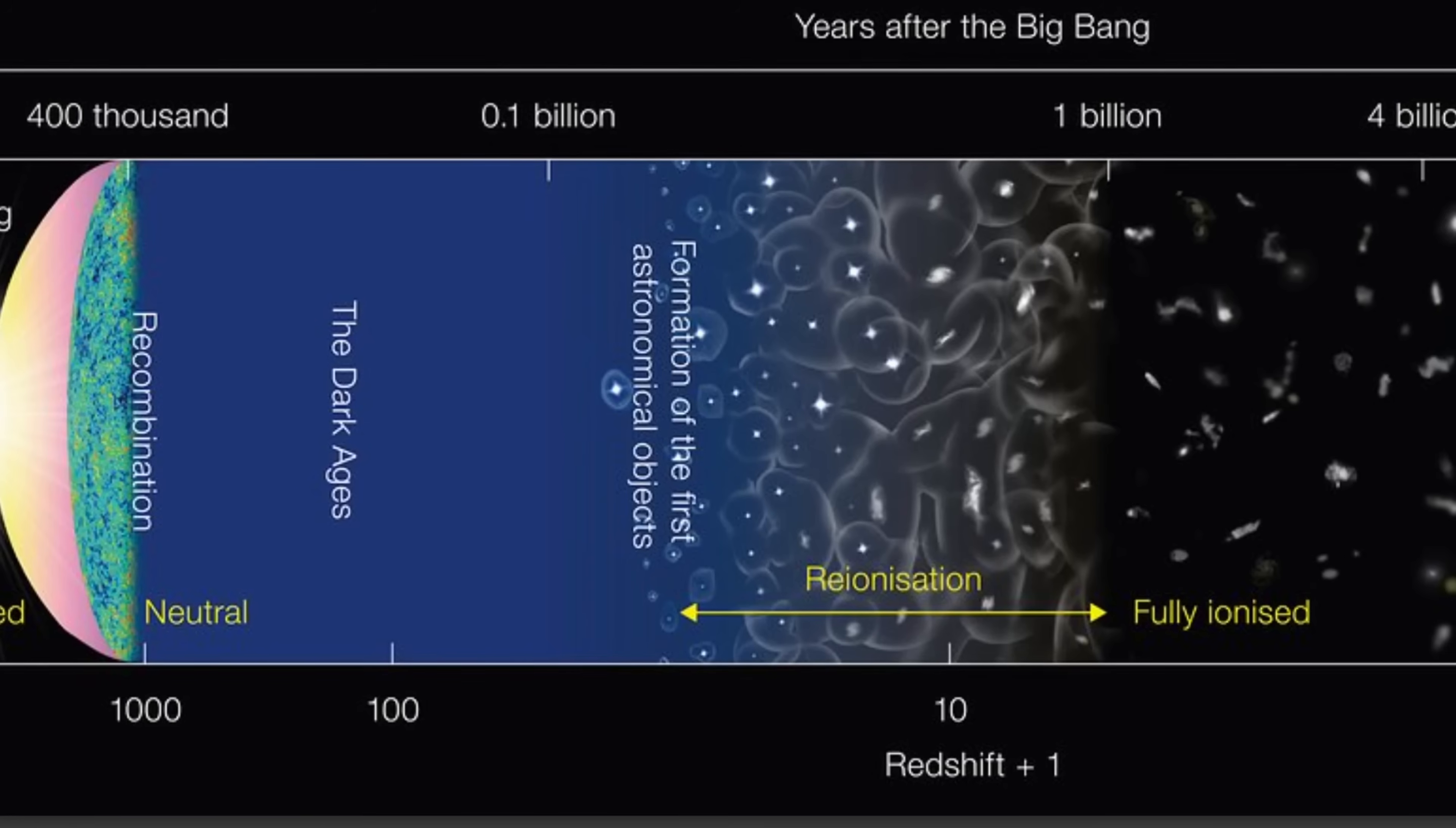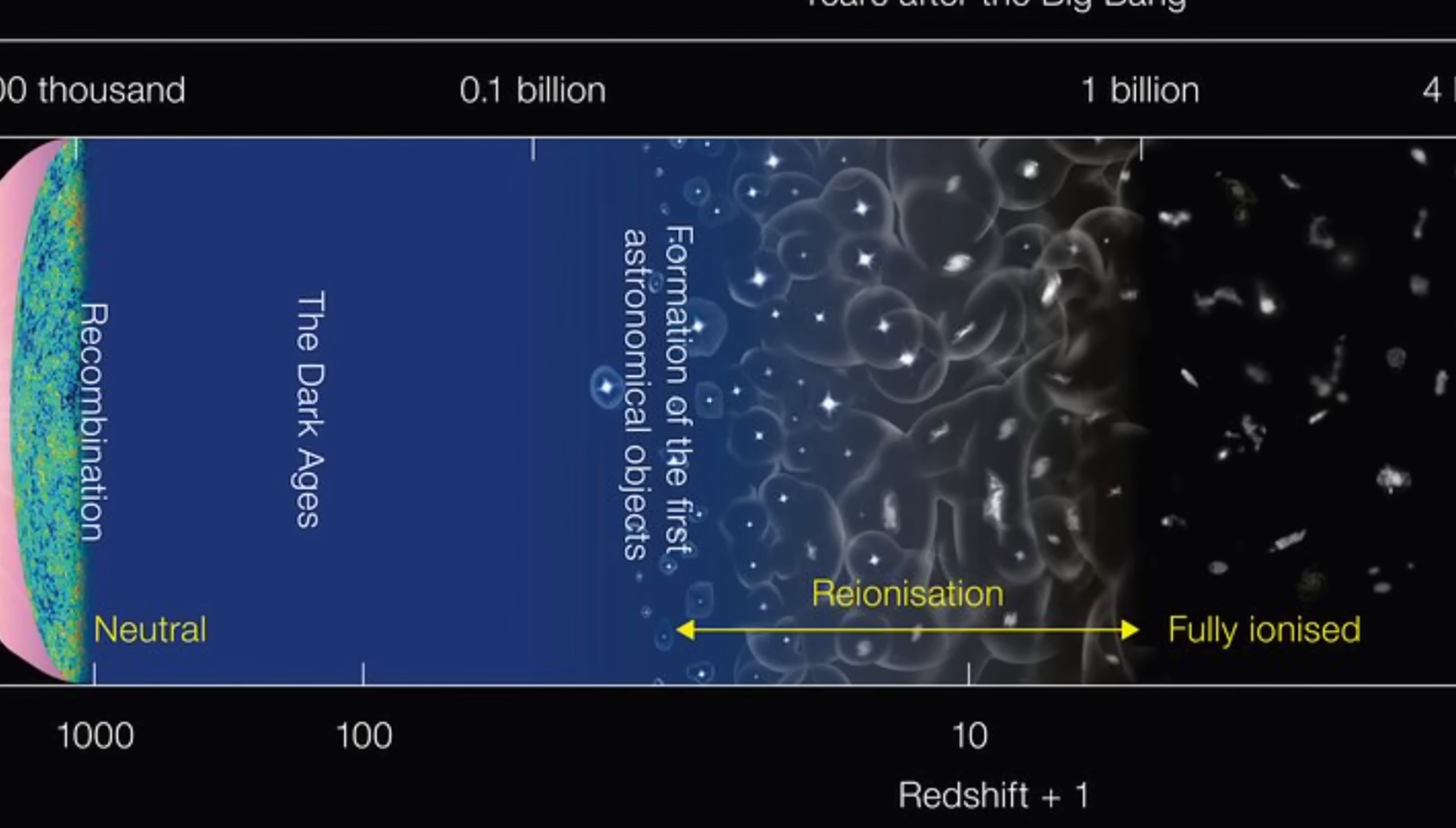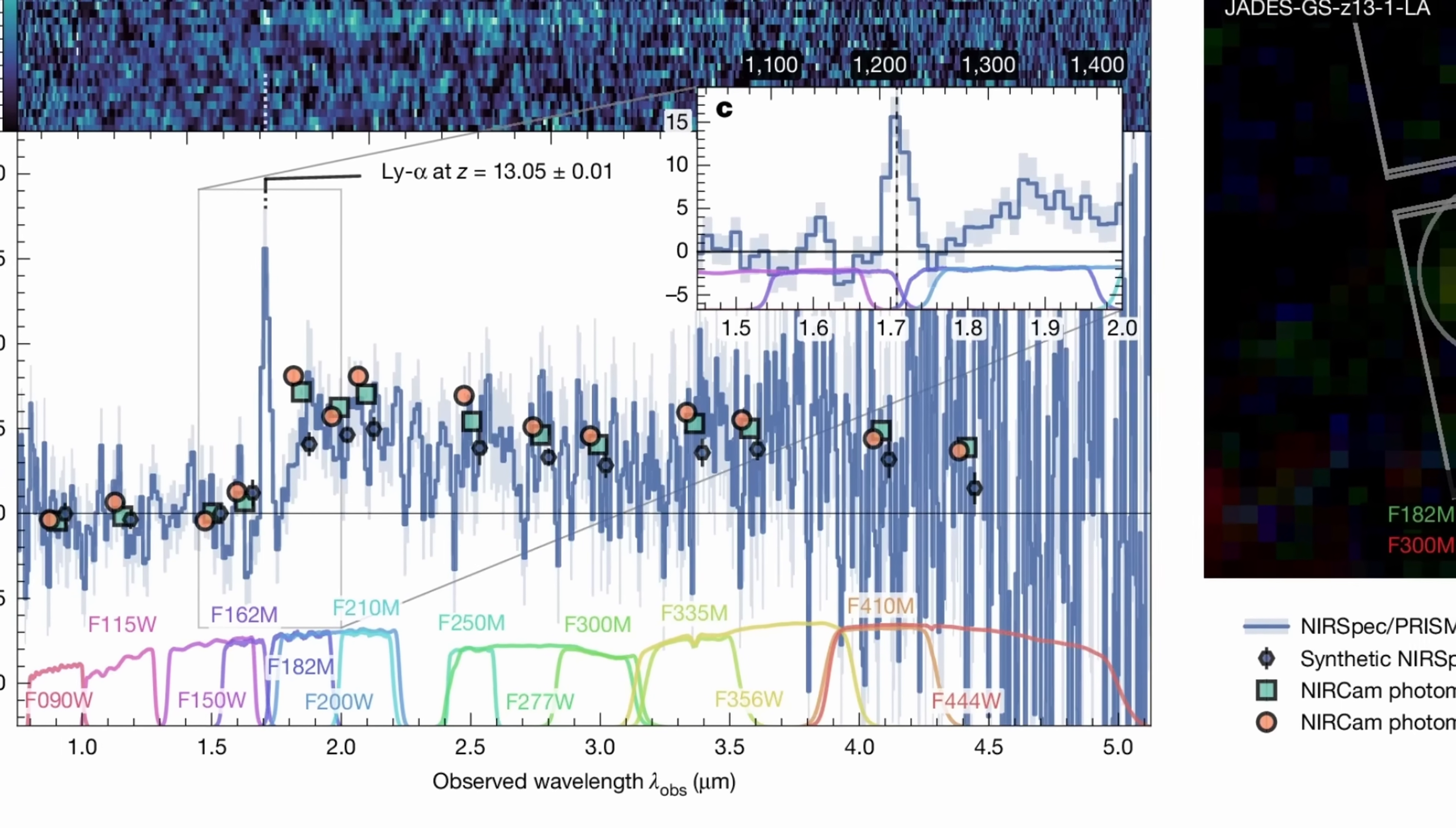Now here, the mystery could be resolved if this was much closer to us or in a much older universe, but this recent study definitively confirms the redshift. This was actually achieved by measuring this Lyman alpha emission and by confirming the redshift to be 13.05.